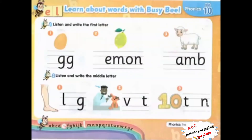Unit 10, Page 7. Exercise 1. Listen and write the first letter. 1. Egg. 2. Lemon. 3. Lamb.